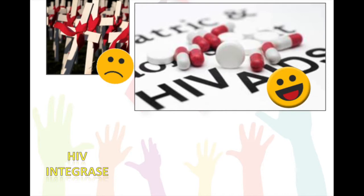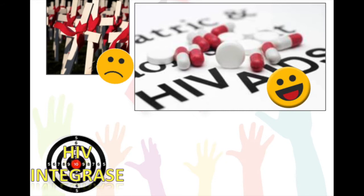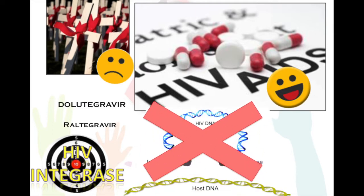Because integrating the viral DNA into the host cell DNA is a crucial step in the successful spread of HIV, HIV integrase is one of the proteins targeted by HAART. Drugs such as dolutegravir and raltegravir are pills that need to be taken daily and disrupt the function of HIV integrase, preventing the DNA from integrating into the host DNA. The integrase inhibitors bind to the DDE motif of HIV integrase and make many bonds with the structure to prevent it from binding to the host DNA.